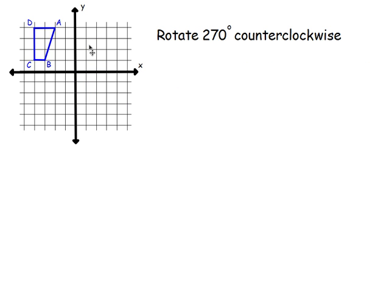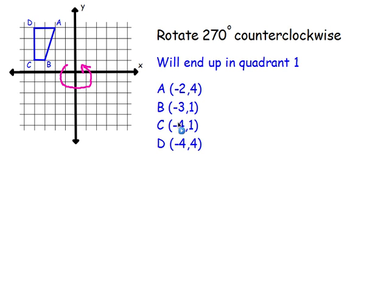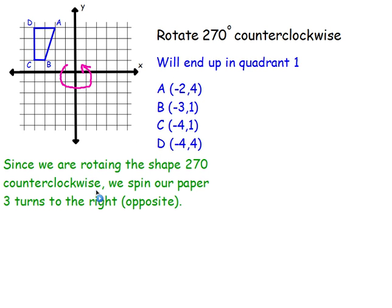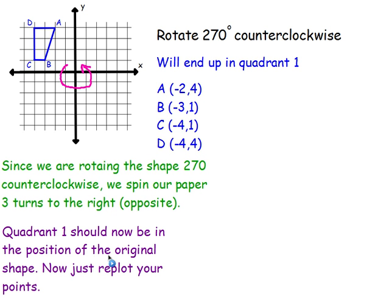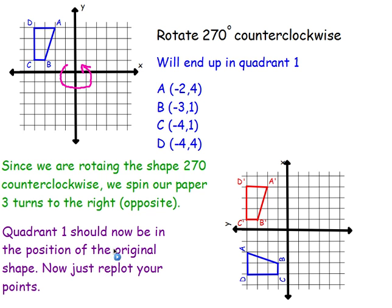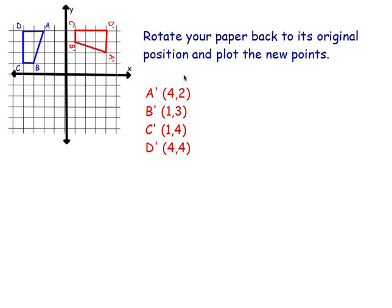This next one we're going to rotate 270 degrees. First, find all my coordinates. We know we're going to end up in quadrant one because we're going counterclockwise. 270 degrees takes me one, two, three quadrants — I end up right there. Then rotate my paper. Since we're going 270 counterclockwise, I'm going to spin the paper to the right — the opposite way — three turns. Now quadrant one should be in the position of the original shape. Replot your points, then take your shape back and write down your new points.